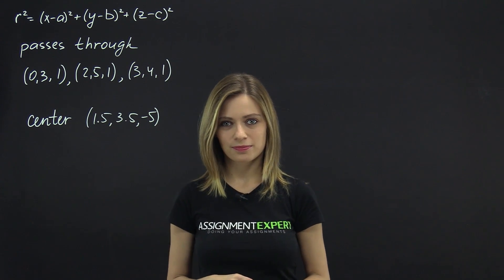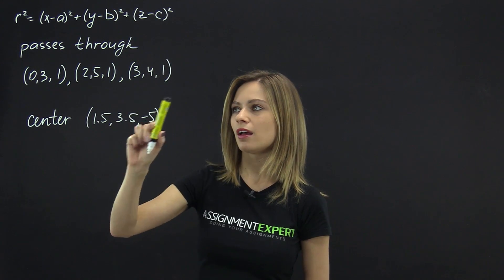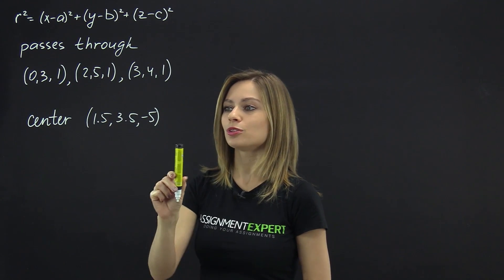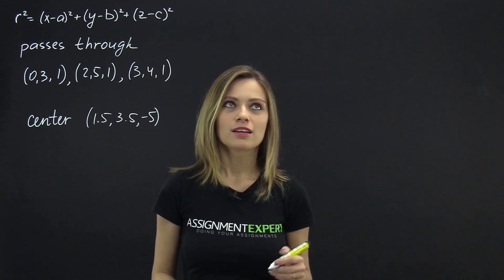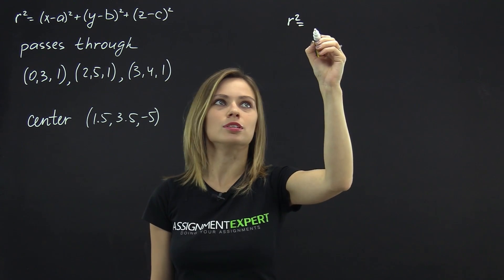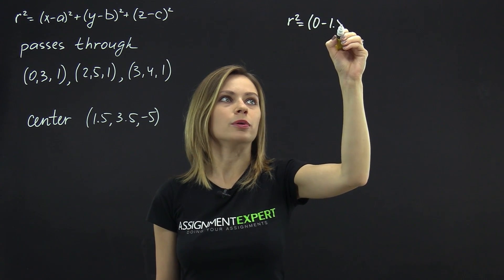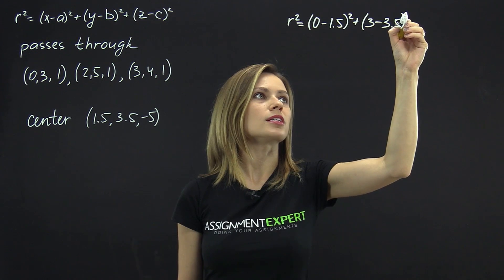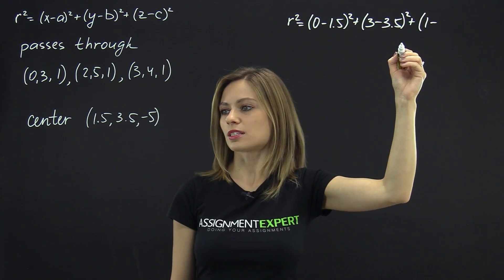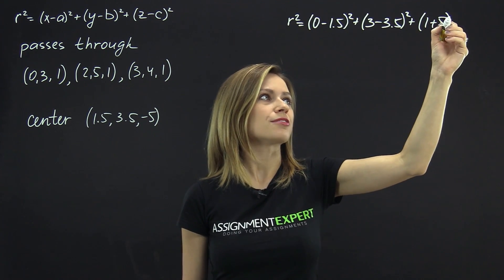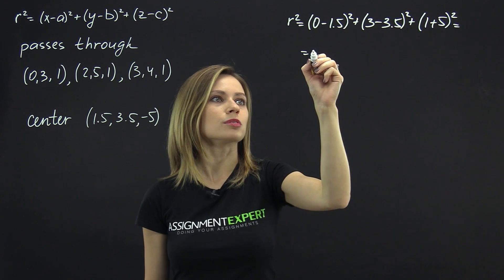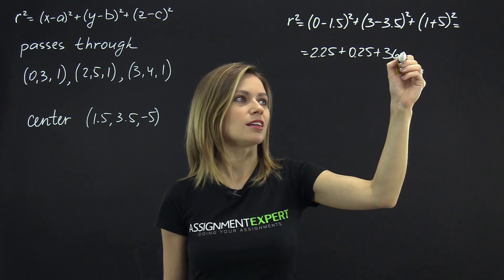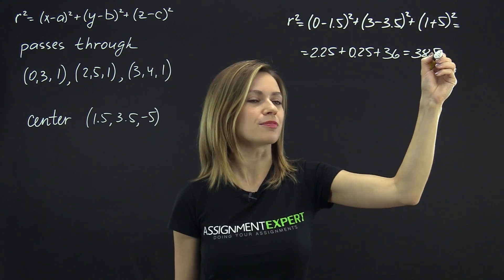Now let's find the radius of the sphere. Our sphere passes through those three points and we already know the coordinates of its center. Let's substitute the coordinates of the first point and the center into the sphere equation: r squared equals (0 minus 1.5) squared plus (3 minus 3.5) squared plus (1 plus 5) squared, which equals 2.25 plus 0.25 plus 36, equal to 38.5.